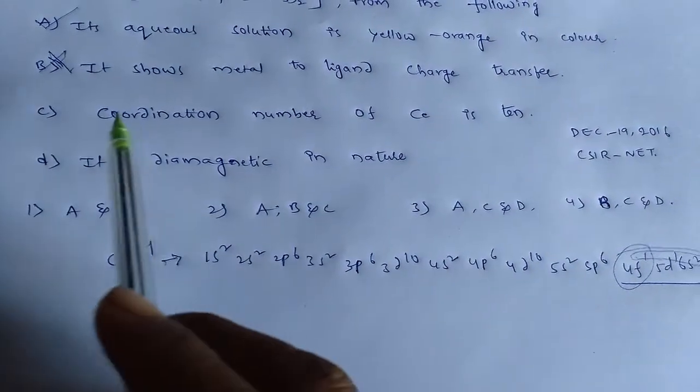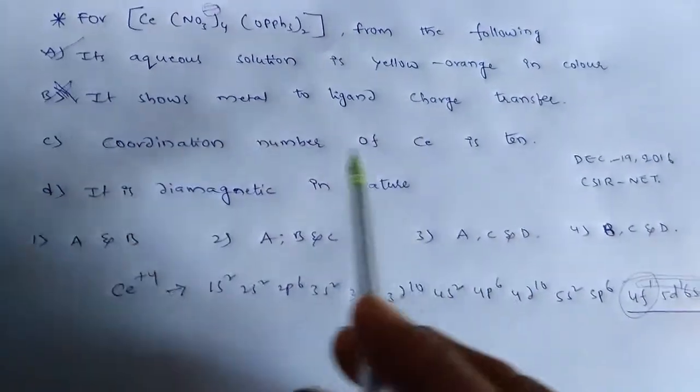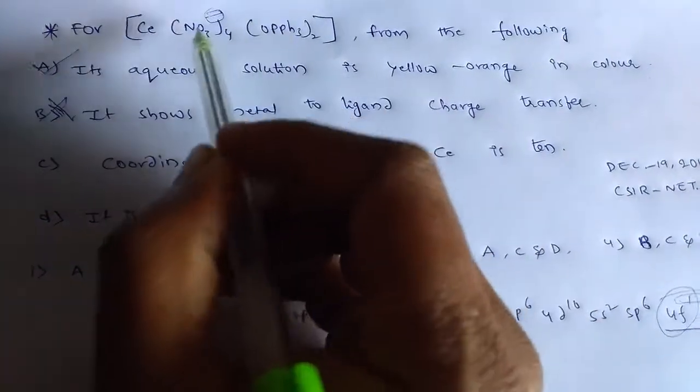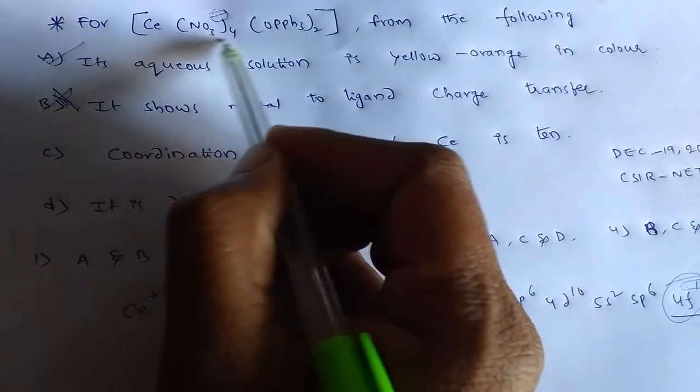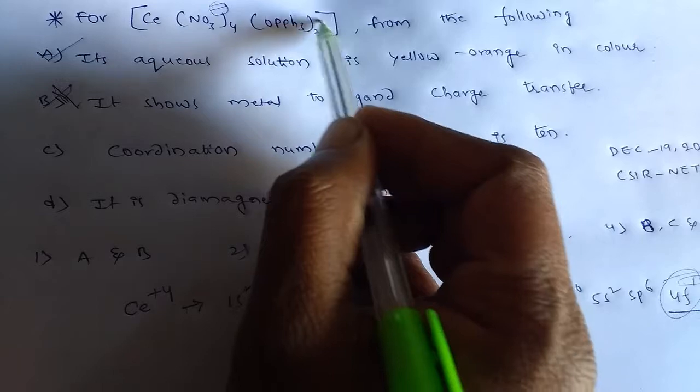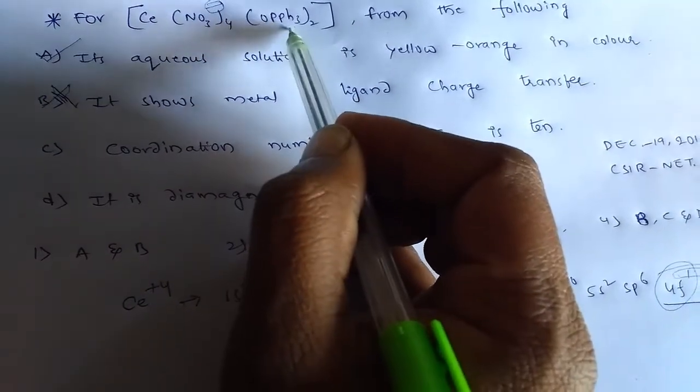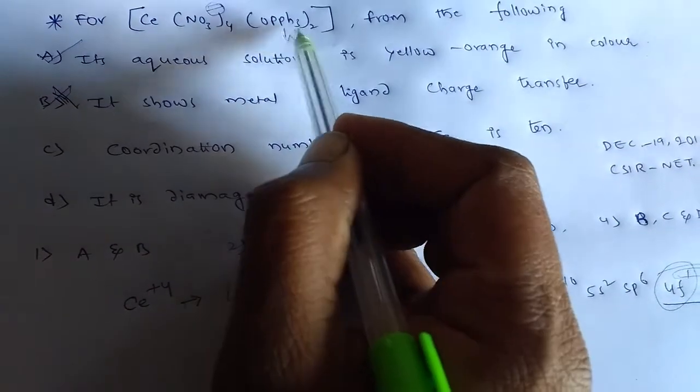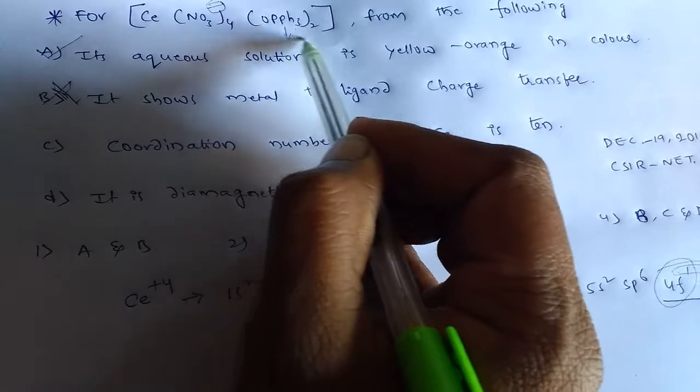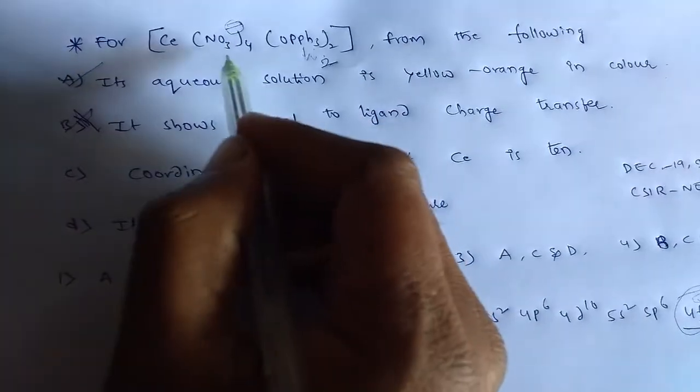Next, consider option C. Coordination number of cerium is 10. Consider this is the complex. We have 4 NO3 and 2 triphenyl phosphorus oxide ligand. So this triphenyl phosphorus oxide ligand is neutral one. And it is only monodentate ligand. Hence the coordination from this ligand is only 2.